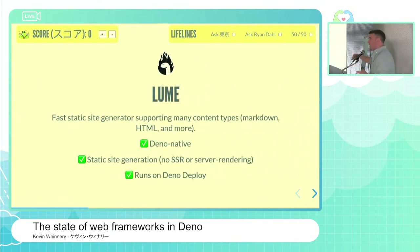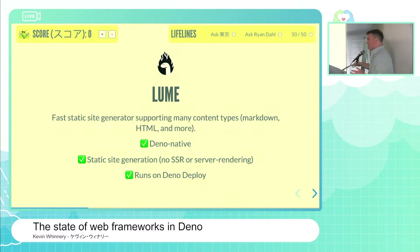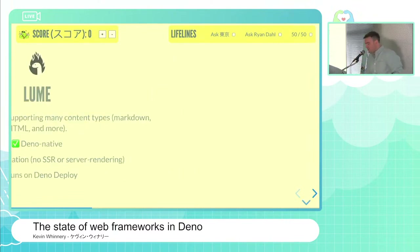Next up on the hit parade: Loom is a static site generator natively built for Dino, and it's really one of the best options you have for static site generation in Dino today. It works great on Dino Deploy. Dino Deploy has a number of different static file serving options, including one in the standard library. You could also use a server like Hono to serve static assets. Loom supports a number of different content types.